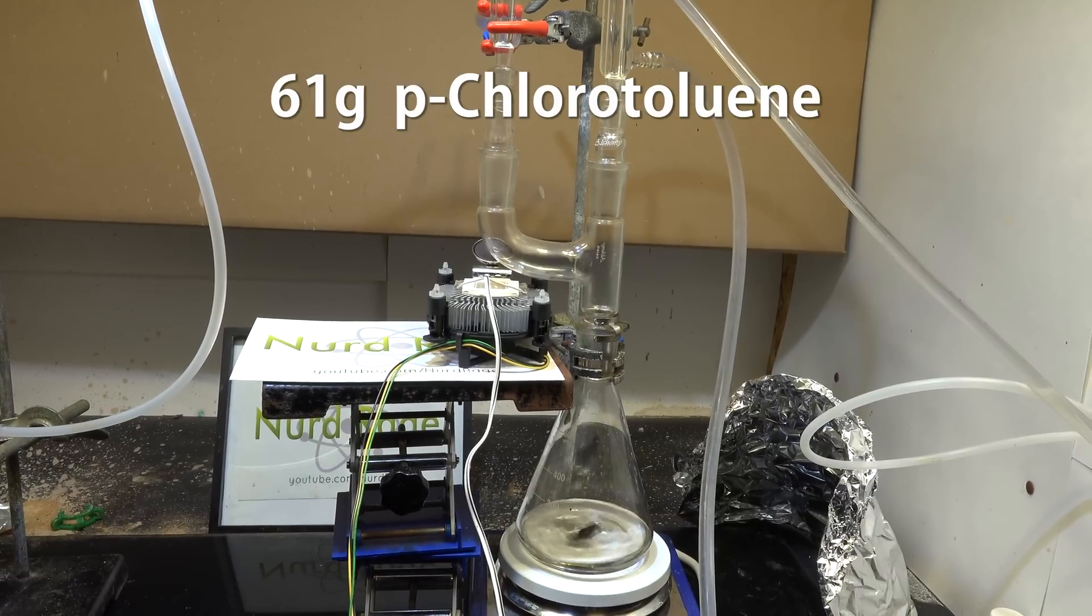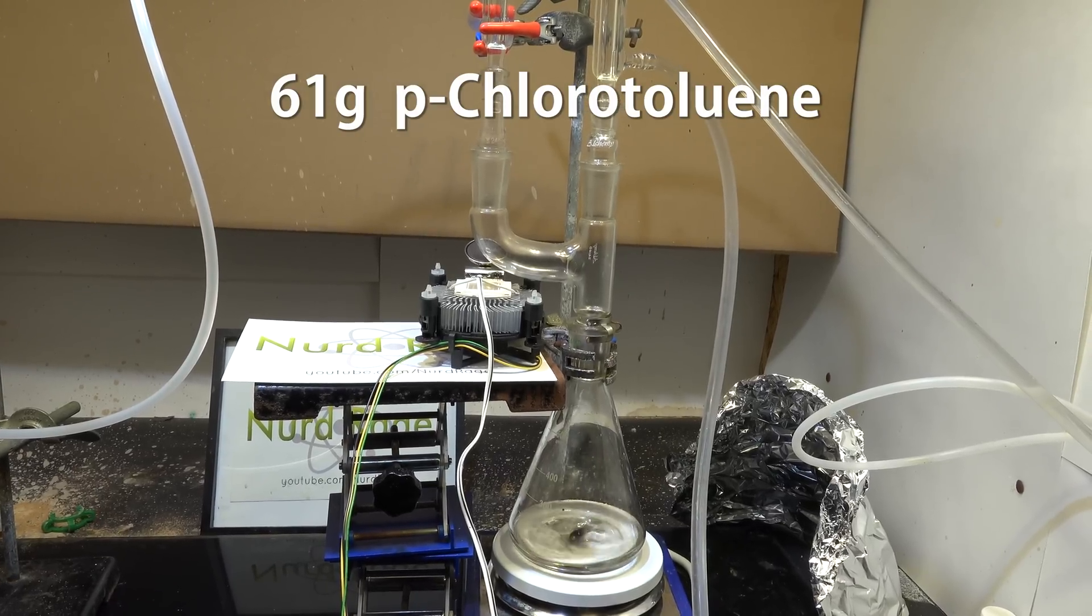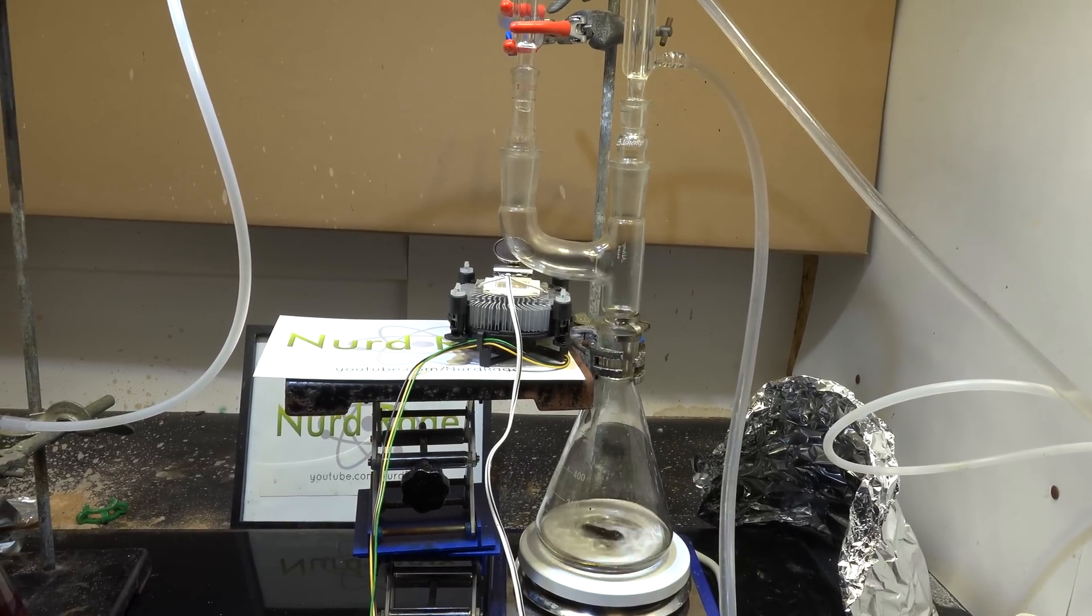First we have our sample of p-chlorotoluene in the Erlenmeyer flask. I've got about 61 grams. We're going to boil that until it refluxes.